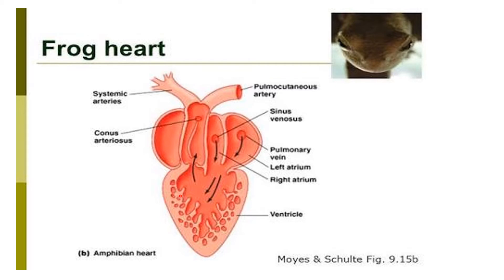In the ventricle you can see some special grooves called ventricular grooves or trabeculi. What is the function of these trabeculi? These trabeculi help to separate the oxygenated and deoxygenated blood, because some parts of the frog — like the brain — need oxygenated blood. The more oxygenated blood gets separated via these ventricular grooves and goes towards the systemic arteries, while the deoxygenated blood through the conus arteriosus goes towards the pulmonary or pulmocutaneous artery, towards the skin and lungs for oxygenation.